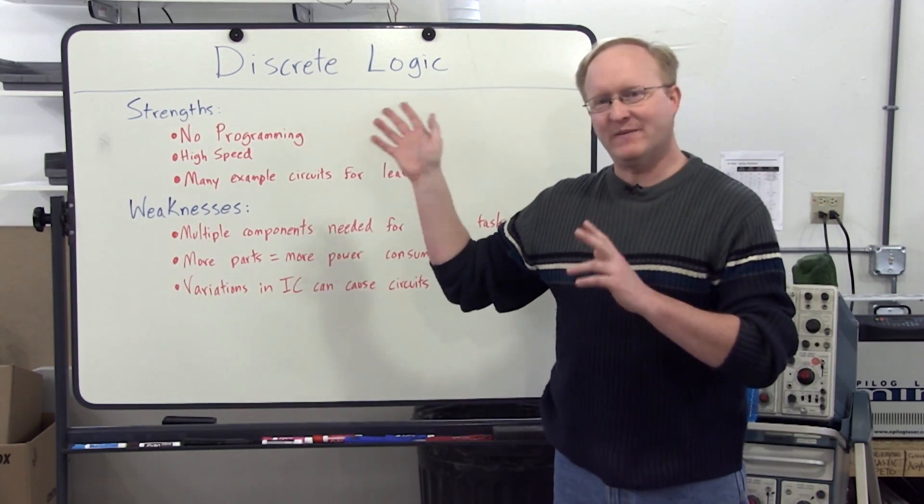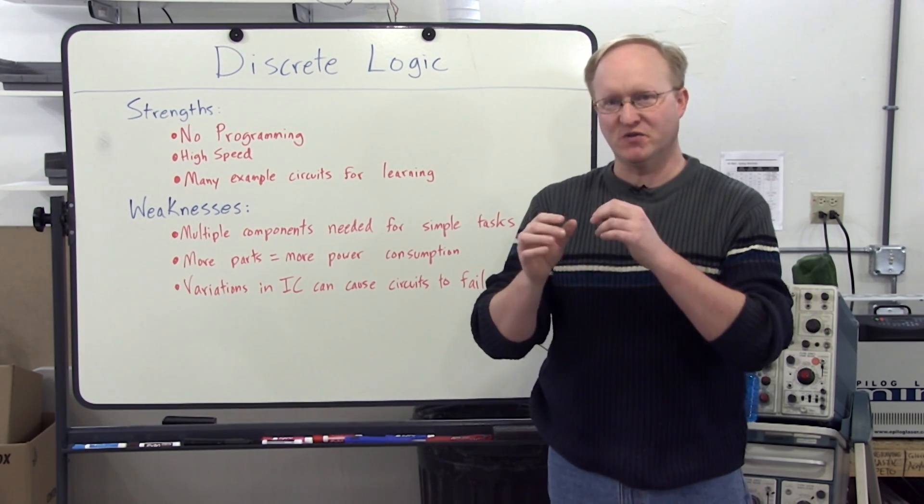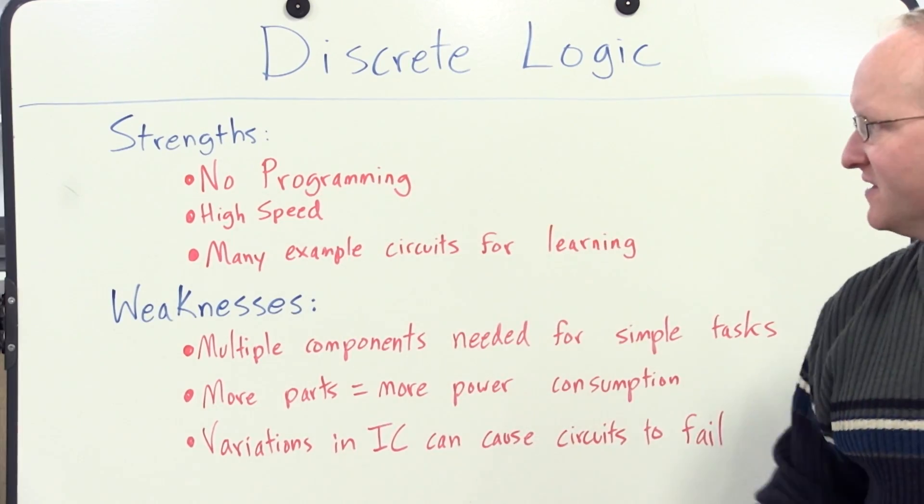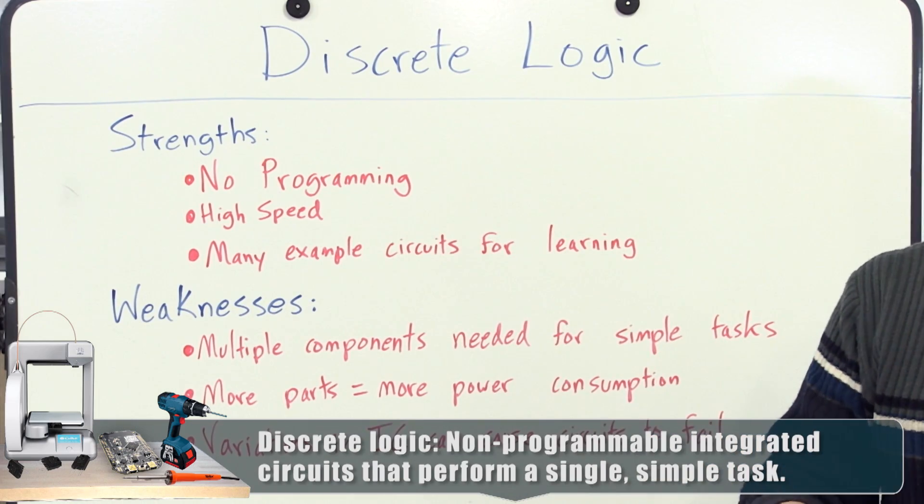Let's start by talking about discrete logic. Discrete logic is when you build circuits using individual chips like AND gates, amplifiers, 555 timers, etc. The strengths of discrete logic are you don't have to program anything. Everything is done with low-level logic.